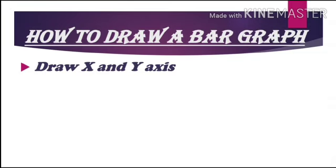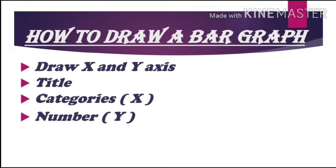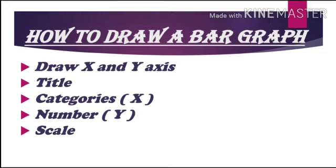Before drawing a bar graph, I will tell you how to draw a bar graph in six easy steps. Step one: draw x and y axes — draw a horizontal line and name it x-axis, then draw a vertical line and name it y-axis. Step two: give a suitable title. Step three: categorize — mark categories like items and objects on the x-axis; mark numbers always on the y-axis for a vertical bar graph. Then mark the scale for the y-axis.